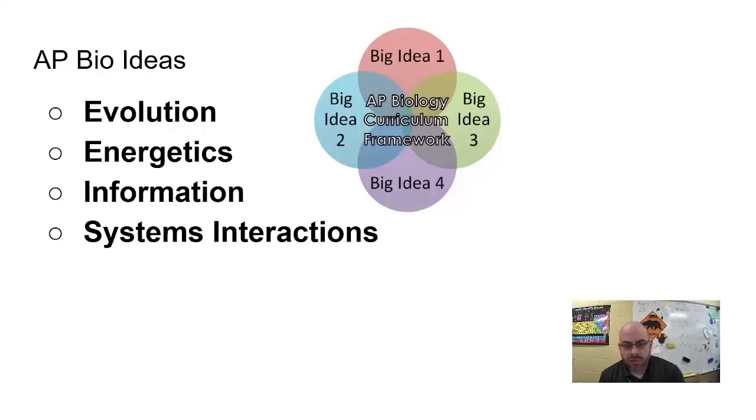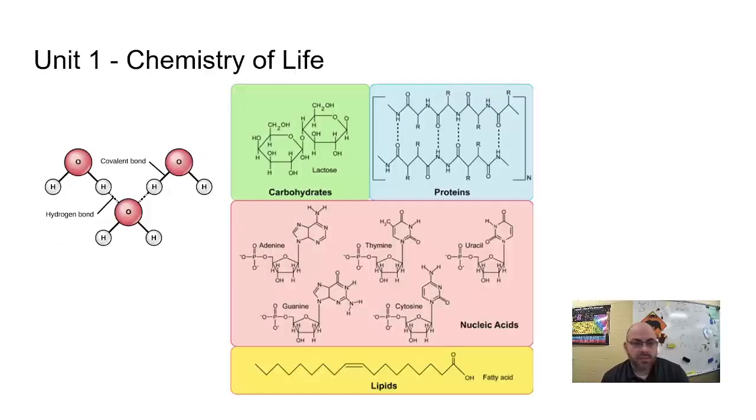Things like structure and flow and interaction and how all these things sort of work together. This picture here shows the evolution, energetics, information, system interactions is the big ideas of the class and how they all sort of interrelate. Well we're gonna walk through each unit quickly. Here we go, unit one, chemistry of life. This was your introduction to the class. It was a great one.